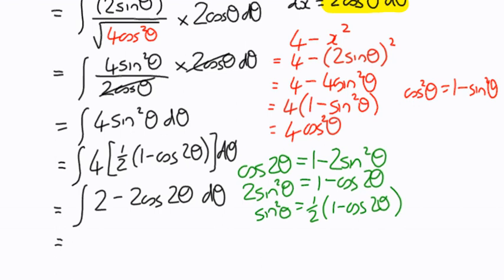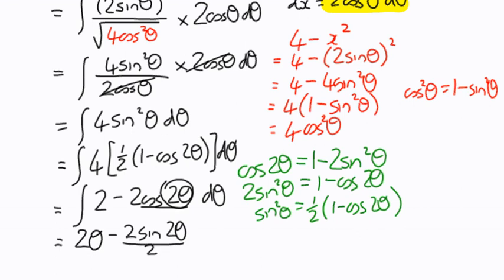Integrating with respect to θ: 2 integrates to 2θ. For 2cos2θ, cosine integrates to sine, so it becomes negative 2sin2θ, but we divide by the derivative of the inside function (which is 2), giving negative sin2θ. So the result is 2θ minus sin2θ plus C.